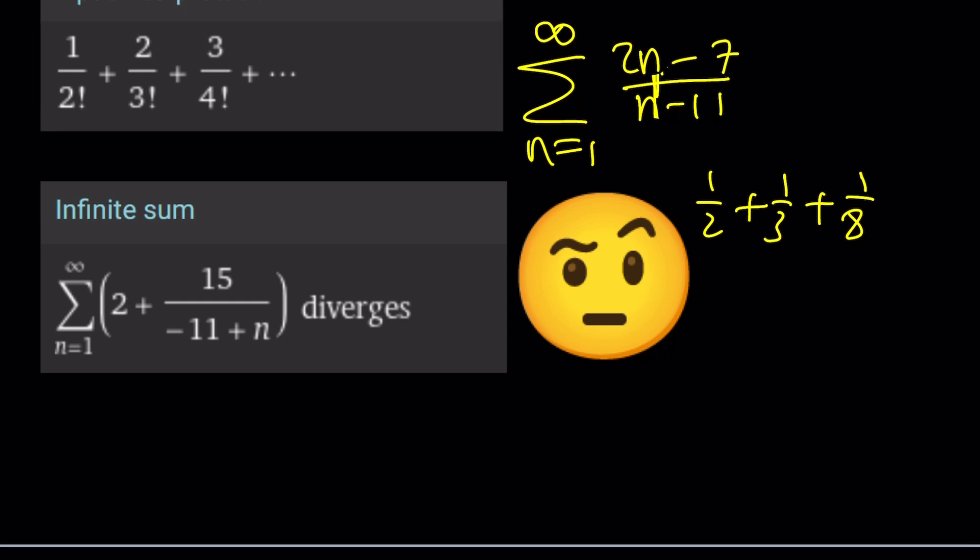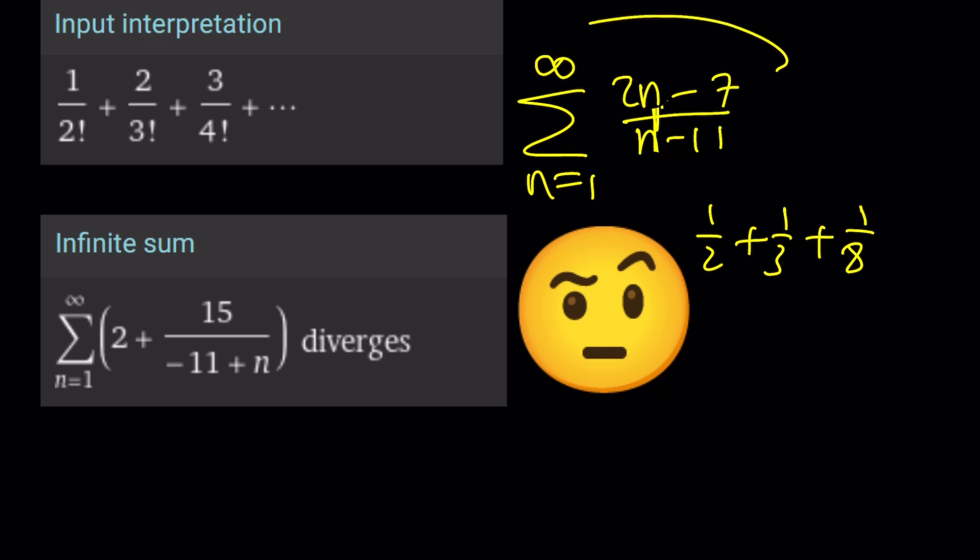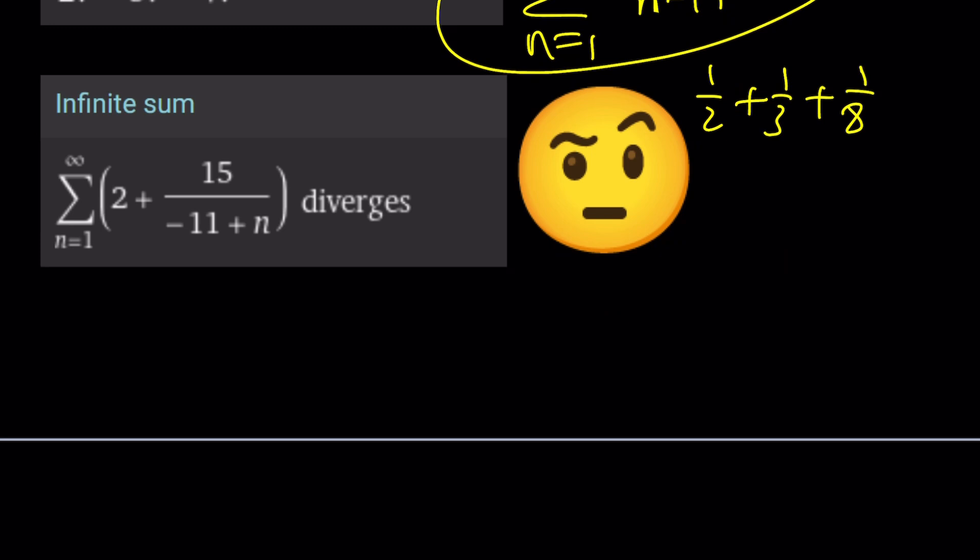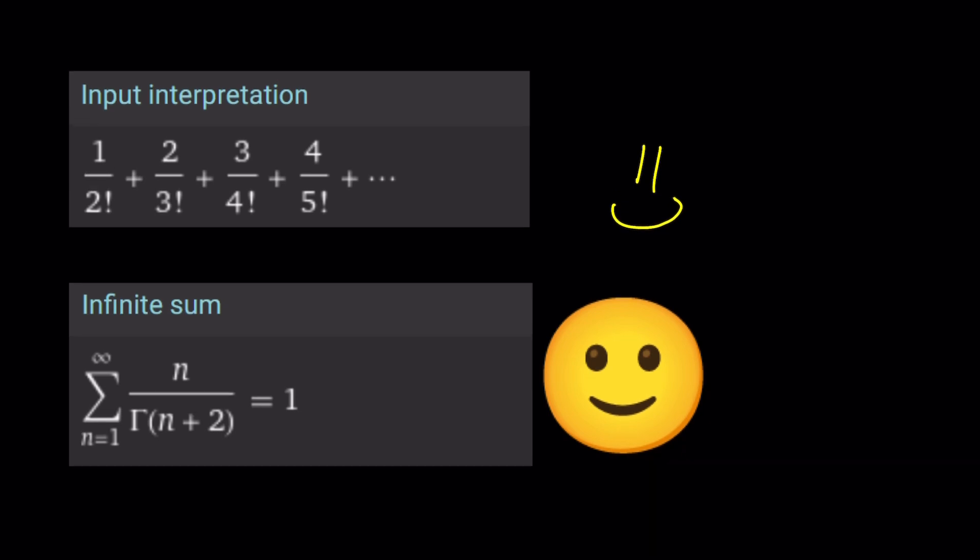Based on the input I gave Wolfram Alpha, it interpreted this sum differently. Not with the factorials, but with some type of rational term. But when I gave it one more term, good job Wolfram Alpha, we should give you some credit. It was able to figure it out. And this function is actually the gamma function. Gamma of n plus 2 is the same thing as n plus 1 factorial. So Wolfram Alpha got it right after I gave it more input. Obviously, that's what large language models do. The more input you give it, the better.